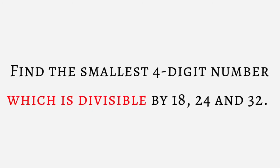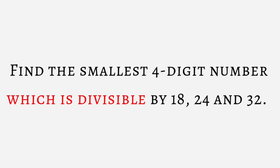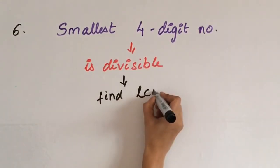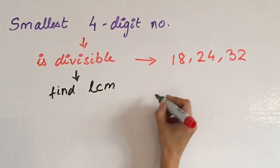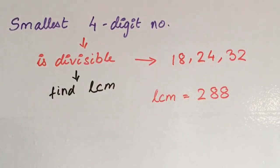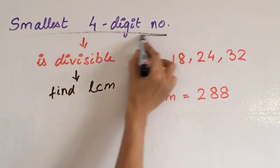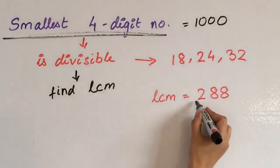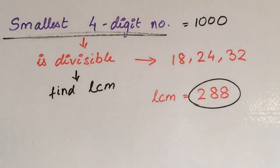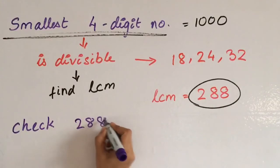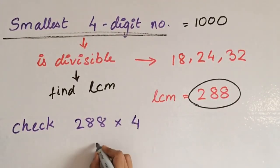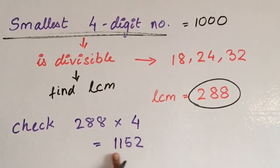Next question. Find the smallest 4-digit number which is divisible by 18, 24 and 32. The smallest 4-digit number should be divided by all three. That means you have to find a common multiple that is LCM. On calculation, you can easily find out that the LCM is 288. But it is a 3-digit number and we need a 4-digit number. The smallest 4-digit number is 1000. So we have to find a multiple of 288 whose value is close to 1000. Let us check it. If we take 288 approximately close to 300, then 3 fours are 12. So 288 multiplied by 4 gives 1152, which is close to 1000. It is a 4-digit number and there is no smaller 4-digit number which divides all three. Therefore, our answer is 1152.